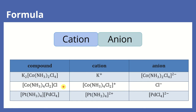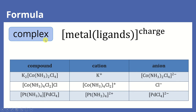In the complex, when you show the formula, we follow this pattern. Brackets represent the complex. In the complex we show the metal first, followed by the ligand — you can have more than one type of ligand, just write them one after another. And if your complex is an ion, you show the charge, either cation or anion, showing plus charge or minus charge.